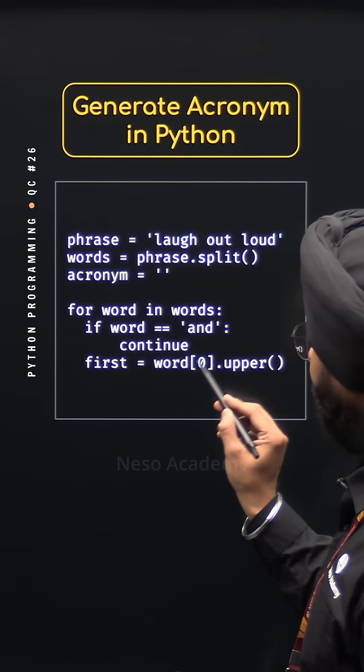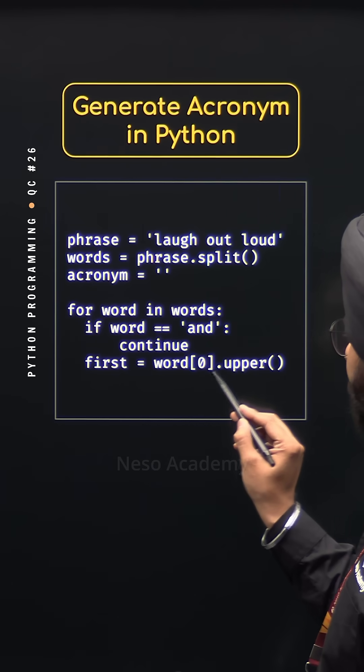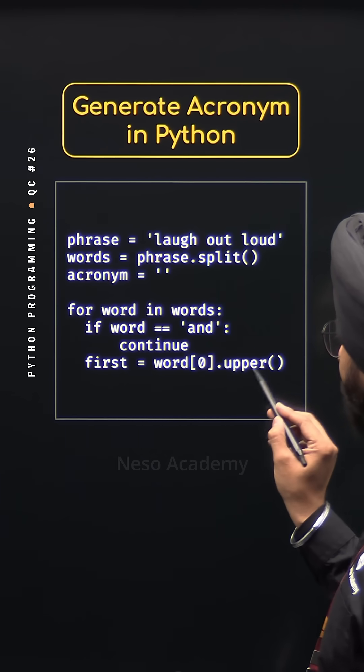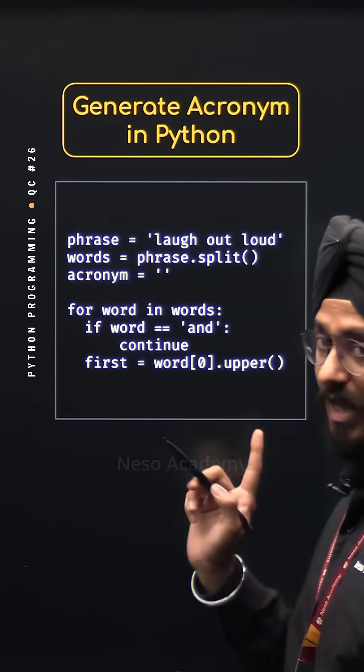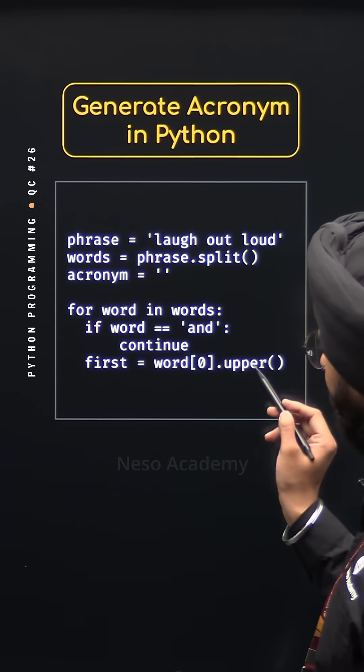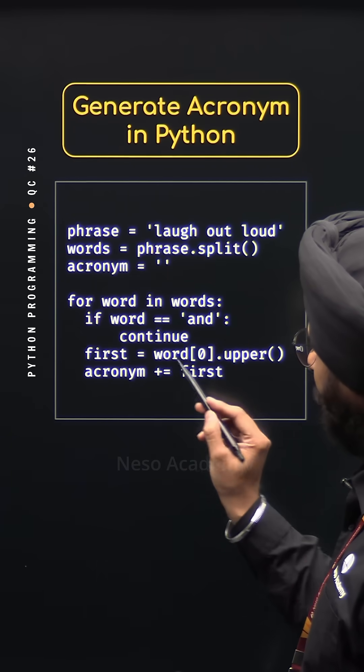Otherwise, we will continue and access the first letter of the word and capitalize it with the help of the upper method. We will get the first letter capitalized and then we will take that letter and add it to the acronym.